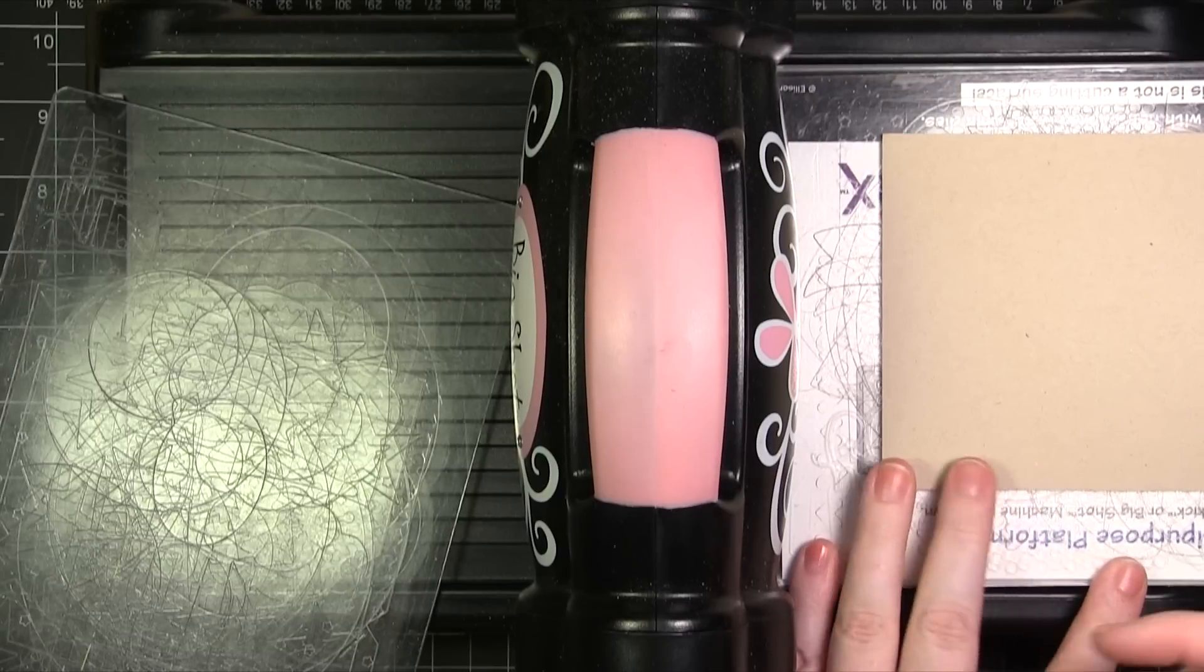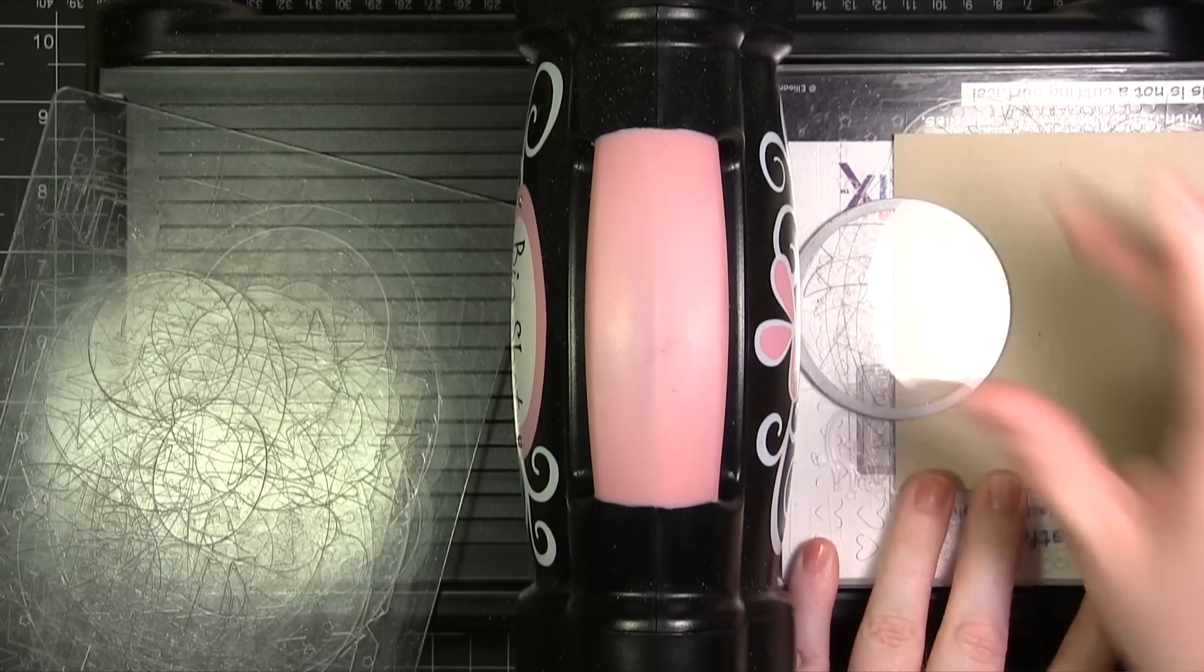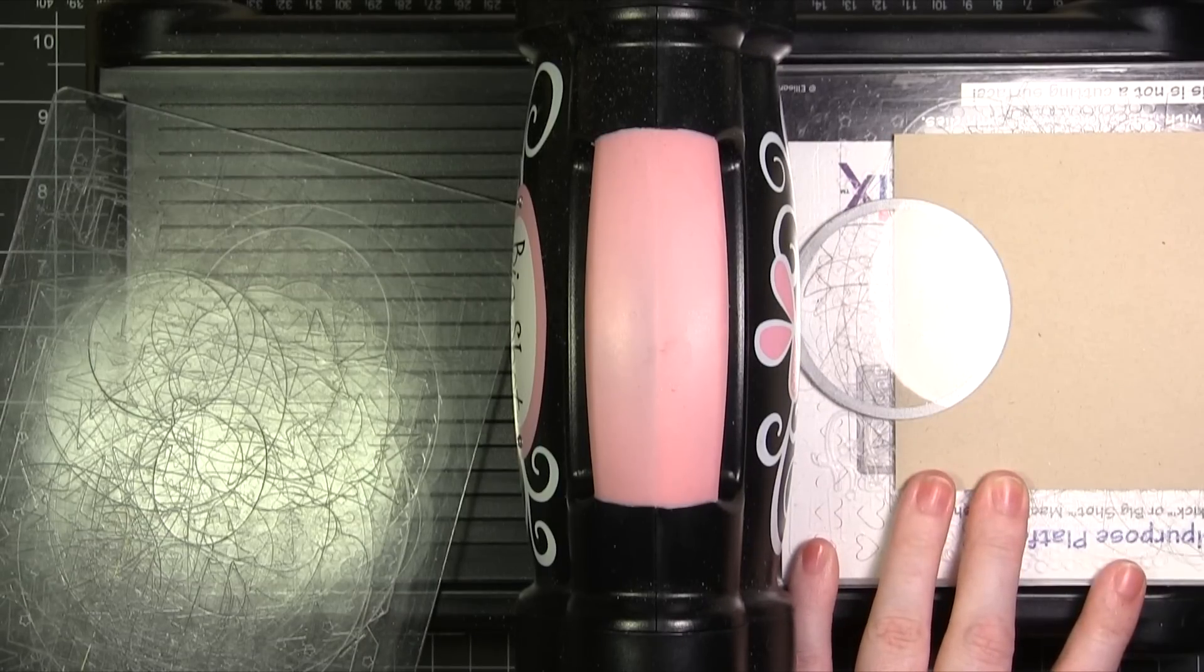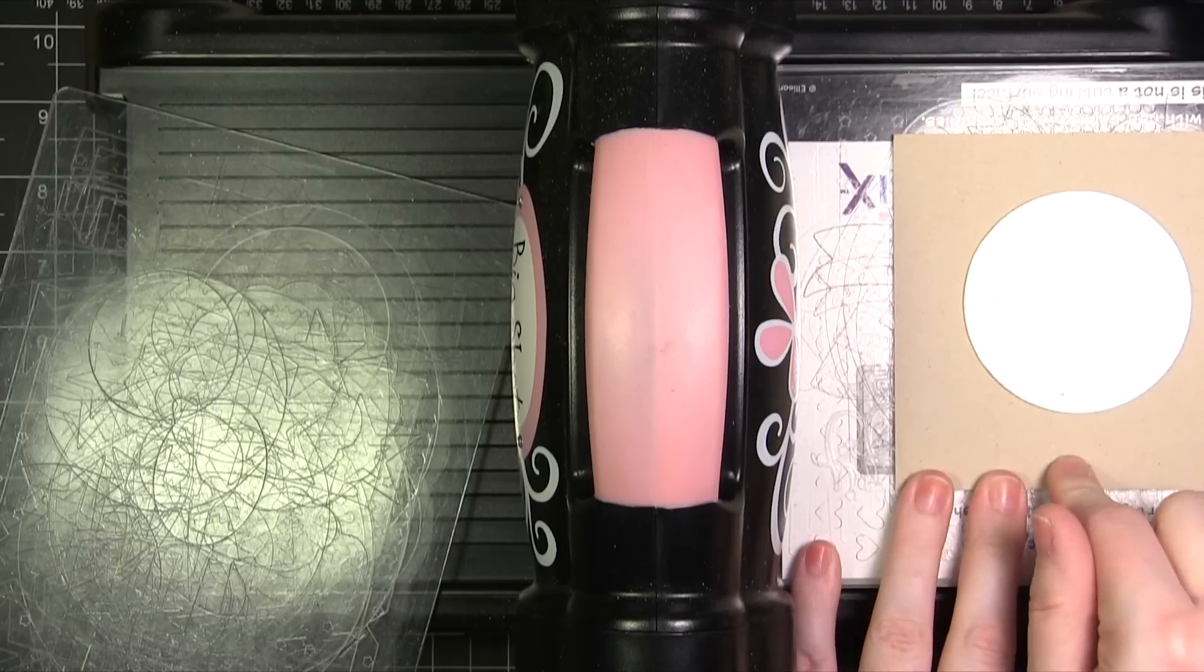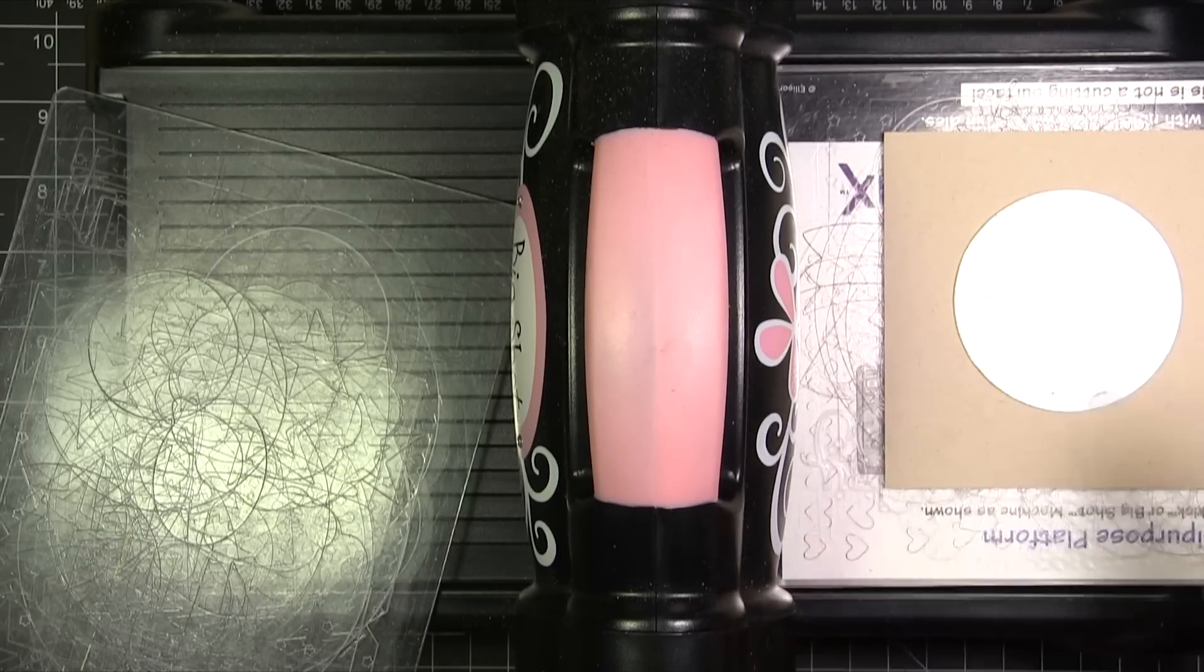The first way is to do it exactly how I did the embossing folder which is have it hang off the edge like that. But let's say you want this half circle in the center of your card. That would be really hard to figure out how to do that.